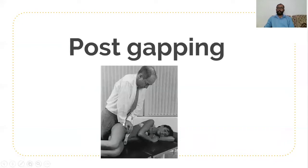In posterior gapping, the patient is in left lateral position and the right ASIS is compressed to check for posterior sacroiliac ligament sprain. By checking anterior and posterior gapping, we can assess the patency of the sacroiliac ligaments. Whenever there is sacroiliac ligament sprain, the patient feels acute pain over the particular area and may also feel giving way. The posterior gapping test is also known as the SQUISH test.